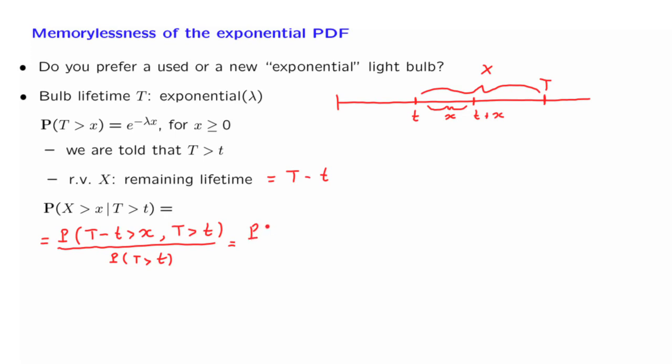We write this event in a cleaner form: capital T being larger than little t plus x and being larger than little t, divided by the probability of the conditioning event. Now notice that capital T will be greater than little t and also greater than little t plus x if and only if it is larger than this second number here. So the intersection of these two events is just this event here, that capital T is larger than little t plus x.